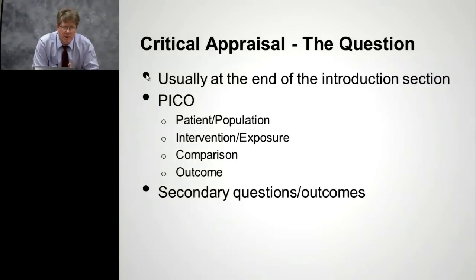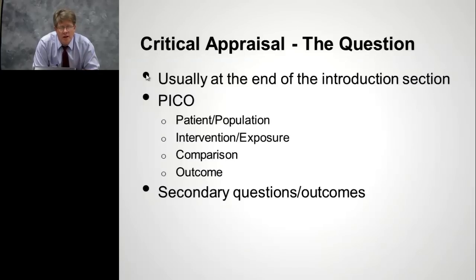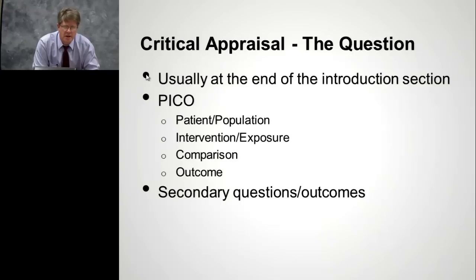Who are the patients or the populations they talked about? What's the intervention or the exposure that they studied? What did they compare that intervention or exposure to — if one set of patients got a vaccine, a drug, or whatever, was it compared to no drug, a different drug, or a placebo? That's the comparison. And then outcome: what outcome did they study? You need to keep a keen eye to see if that outcome really matters to your patient. There can also be a lot of secondary questions or outcomes that authors can ask, and oftentimes it'll be hard to figure out what the primary question is in the midst of all these secondary questions. But try to keep that straight.